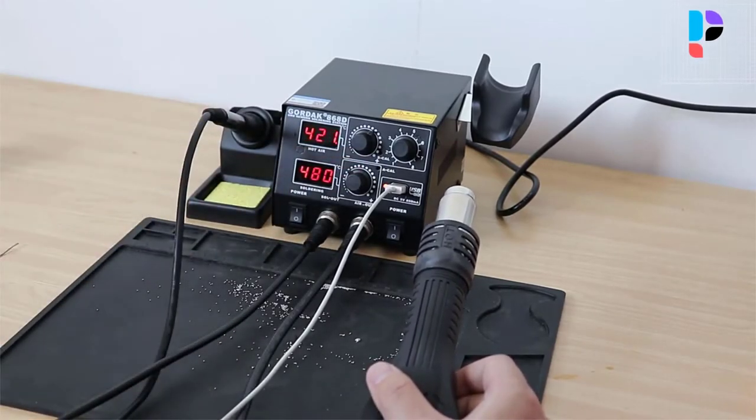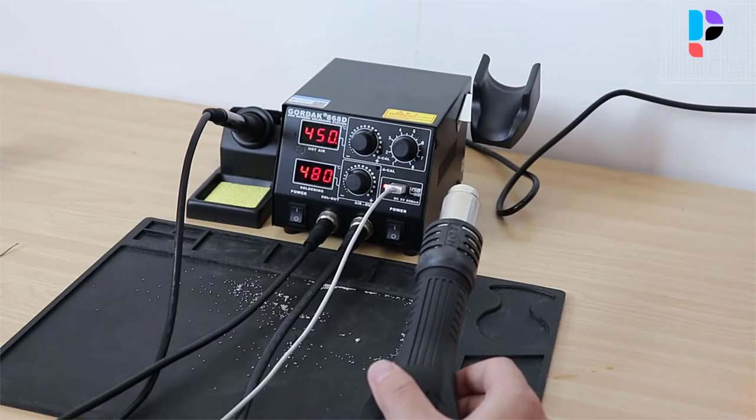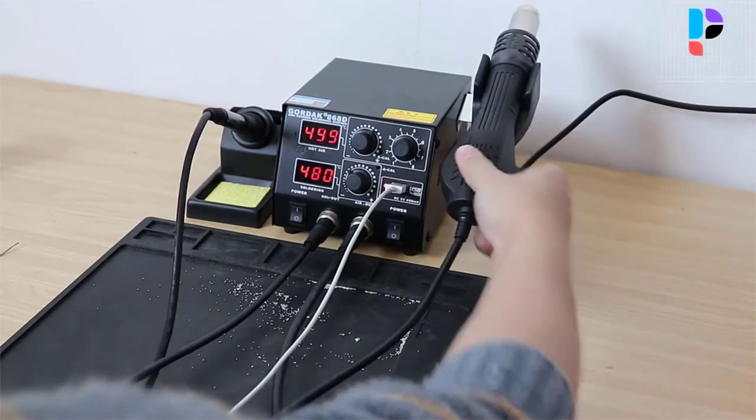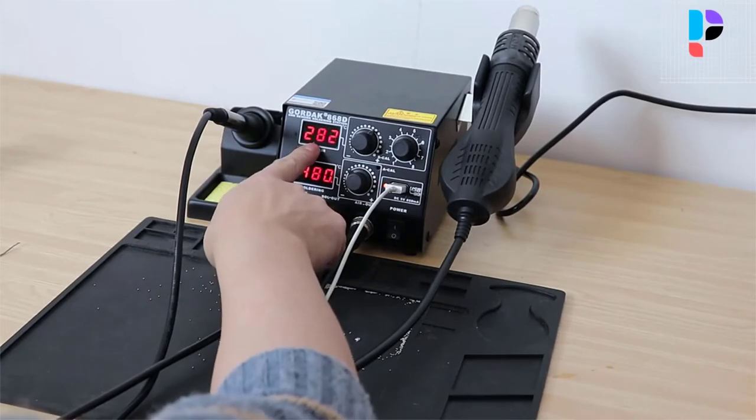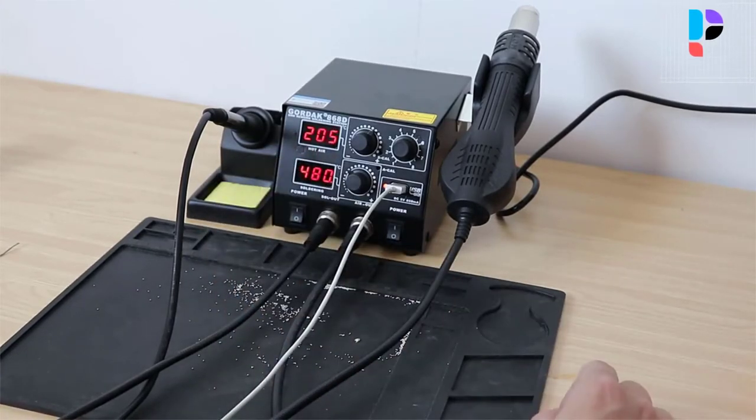The two stations can work separately. Intuitive fault indication function. With soldering iron air gun dual function, can be used freely, used alone or at the same time.